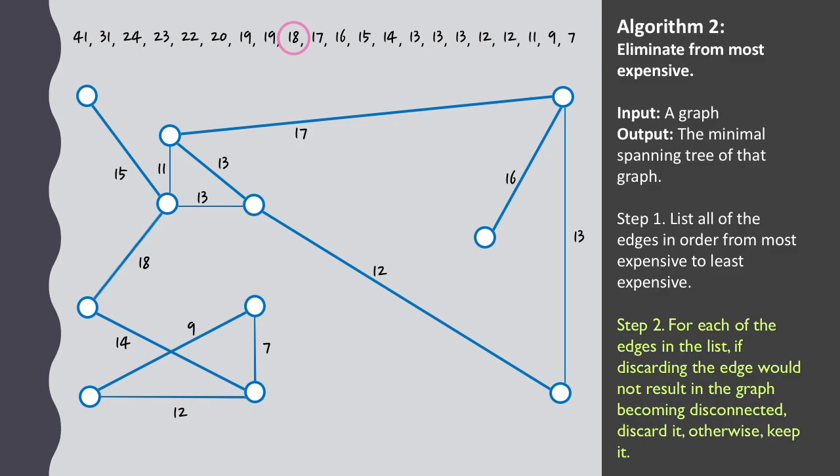Once we consider the 18 edge, we can see that removing it would separate the top half of the graph from the bottom, so this is the first edge that we need to keep.